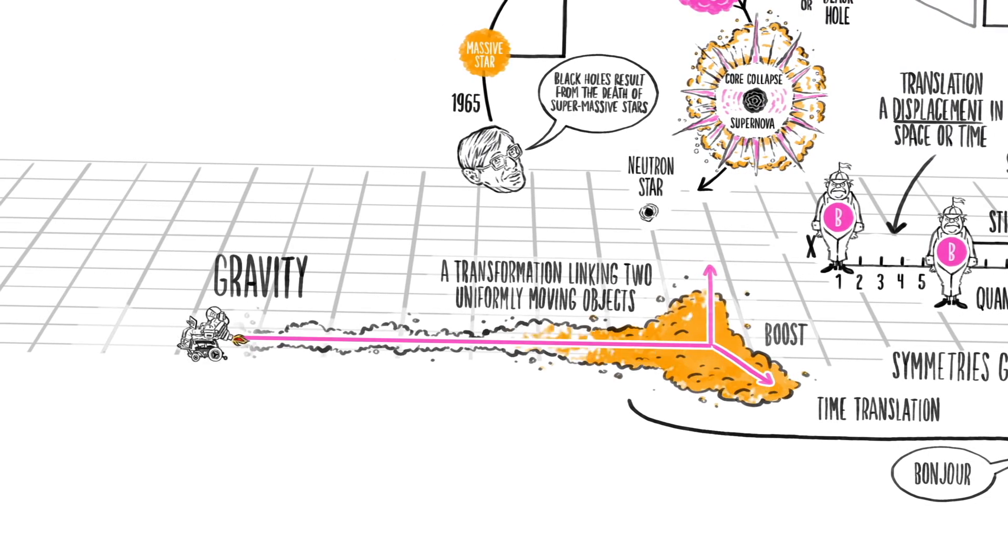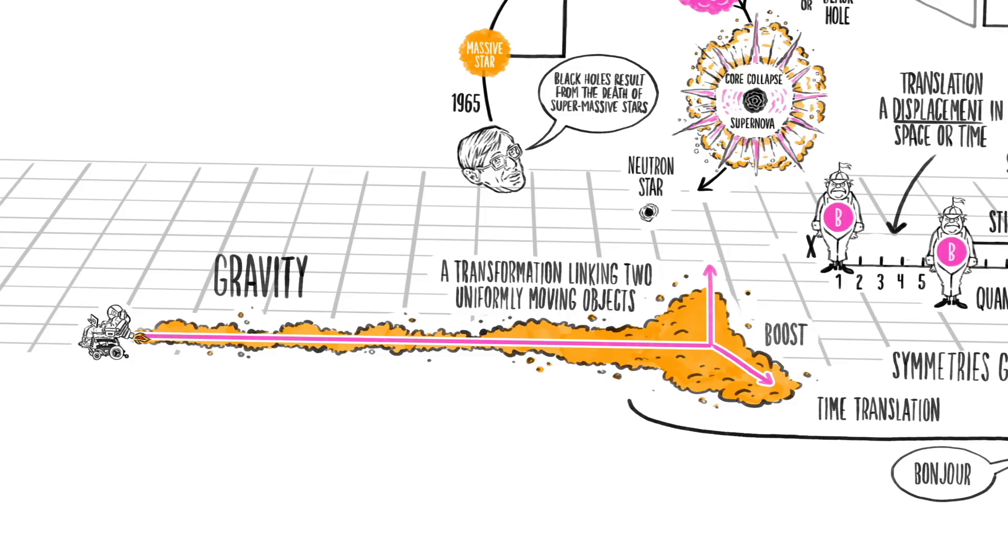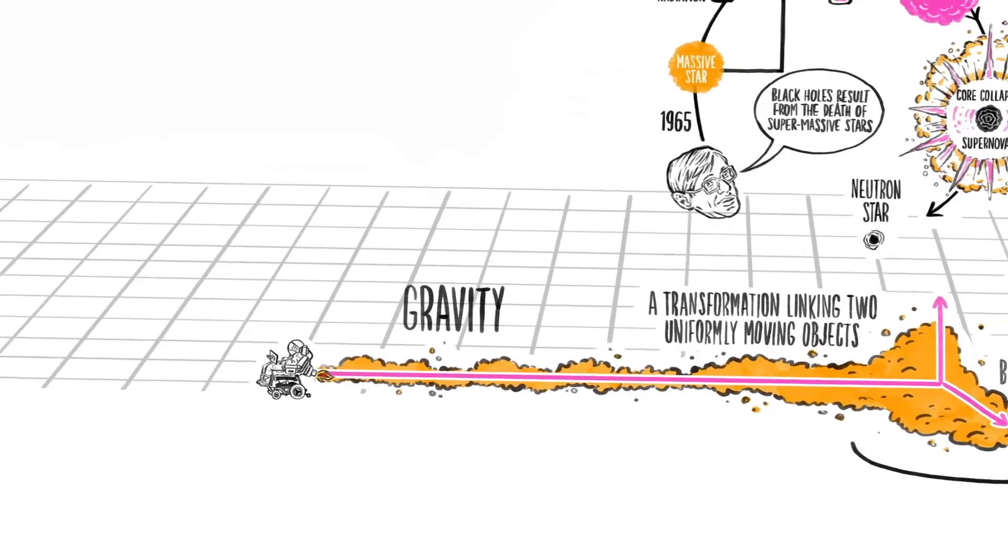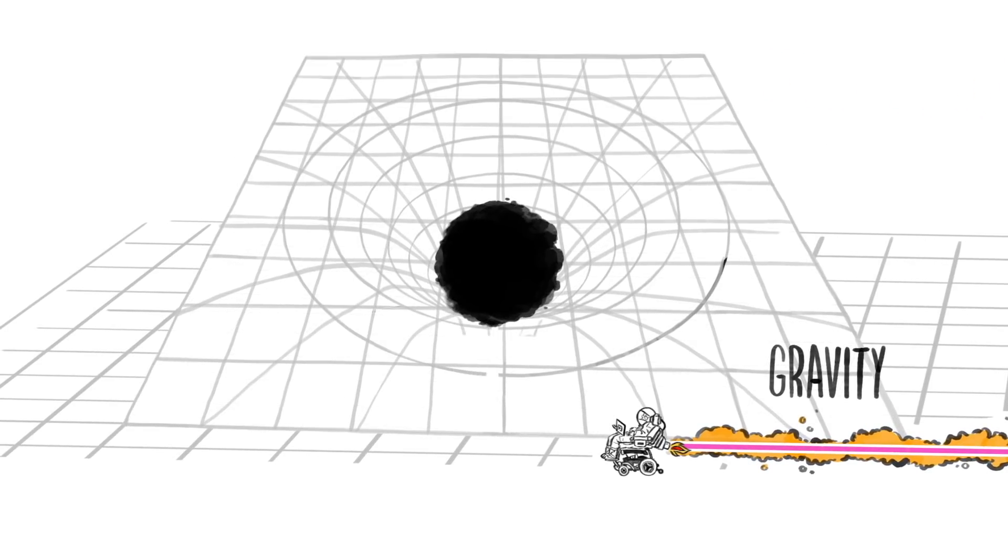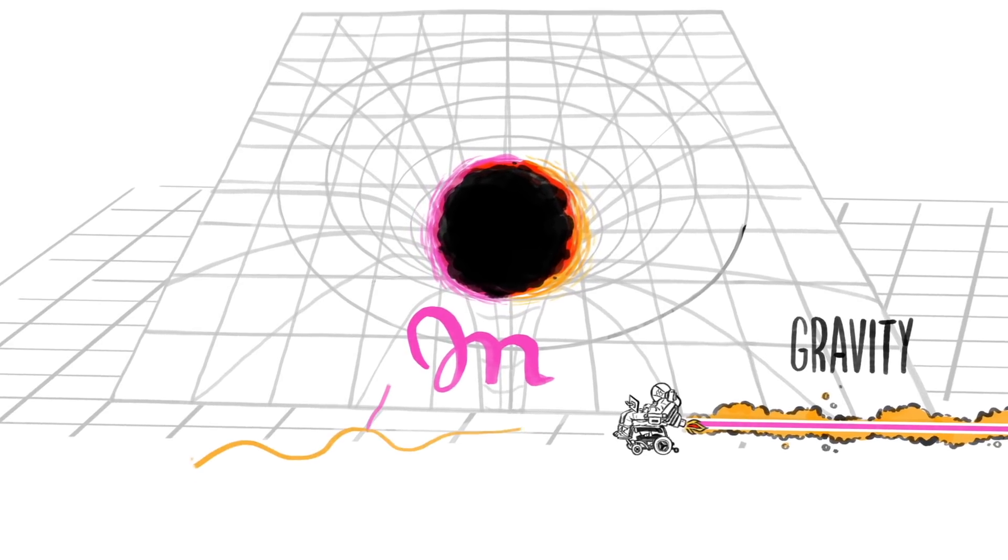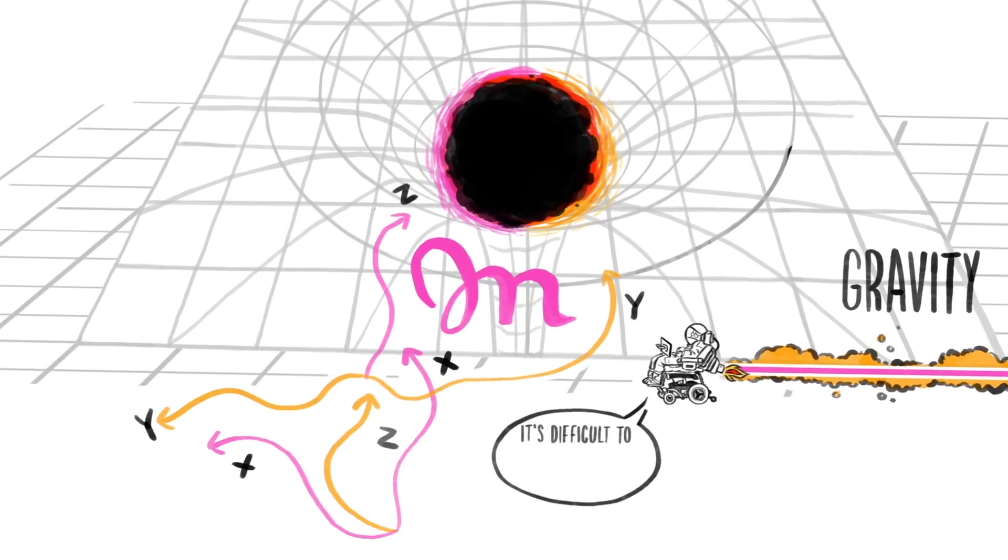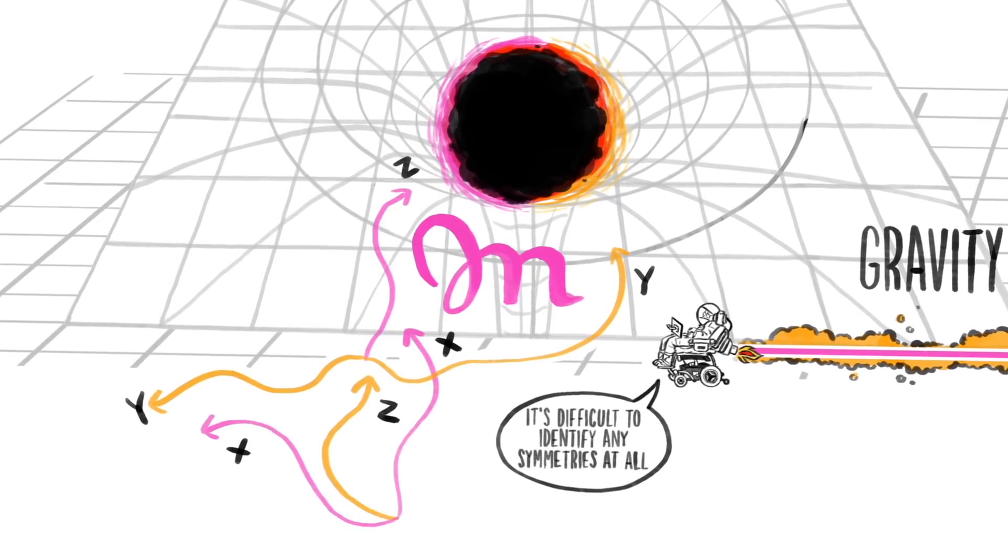As soon as gravity is included and curvature is introduced into the spacetime, these transformations no longer hold as symmetries. Near a black hole, there is so much mass, and the spacetime is so violently distorted that it is very difficult to identify any symmetries at all.